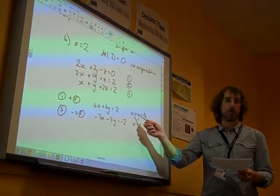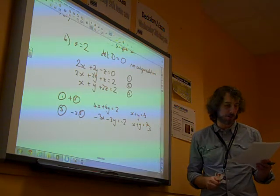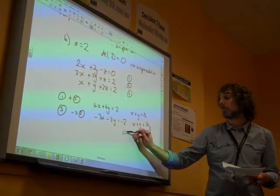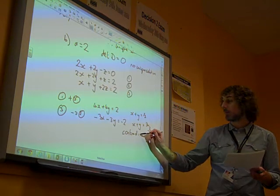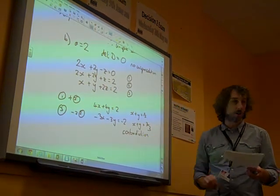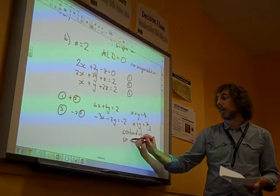We've got x plus y is a half from that pair, x plus y is 2 thirds from that pair. That is a contradiction. x plus y can't be both of those things, and a contradiction tells us that they are inconsistent.